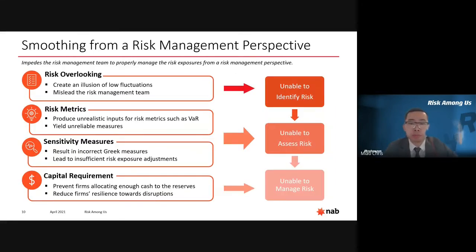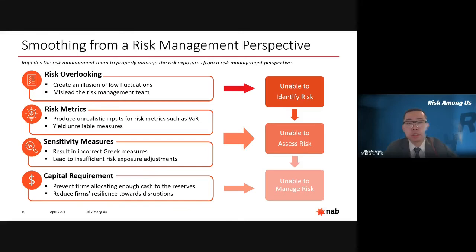From a risk management perspective, if smoothing activity becomes a common practice, it would impede the risk management team from properly managing risk exposures. First, smoothing creates an illusion of low fluctuation in trading performance, misleading the risk management team into believing traders are generating consistent profit under the current trading strategy, causing risk managers to overlook potential risk exposures. Second, smoothing causes risk metrics not to reflect the true business condition — for example, VAR and expected shortfall are commonly estimated based on past data, and since smoothing reduces historical fluctuation, those risk metrics are unlikely to be realistic.